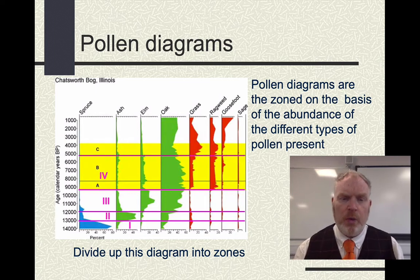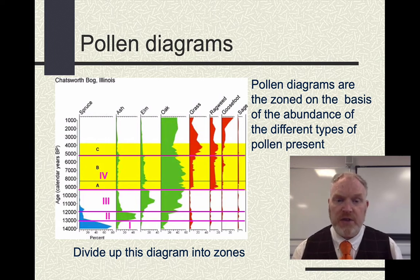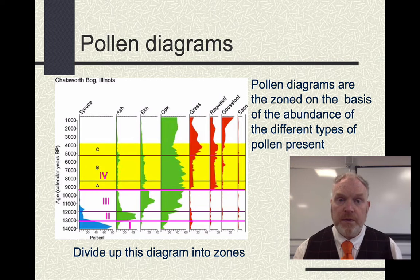In part one I said I'm not terribly convinced by the zonations already marked on here. I've put zone four up to nearly 5,000 years ago. Here we can see a woodland that is dominated by oak, with a small amount of elm and ash. But oak is really the key to this.